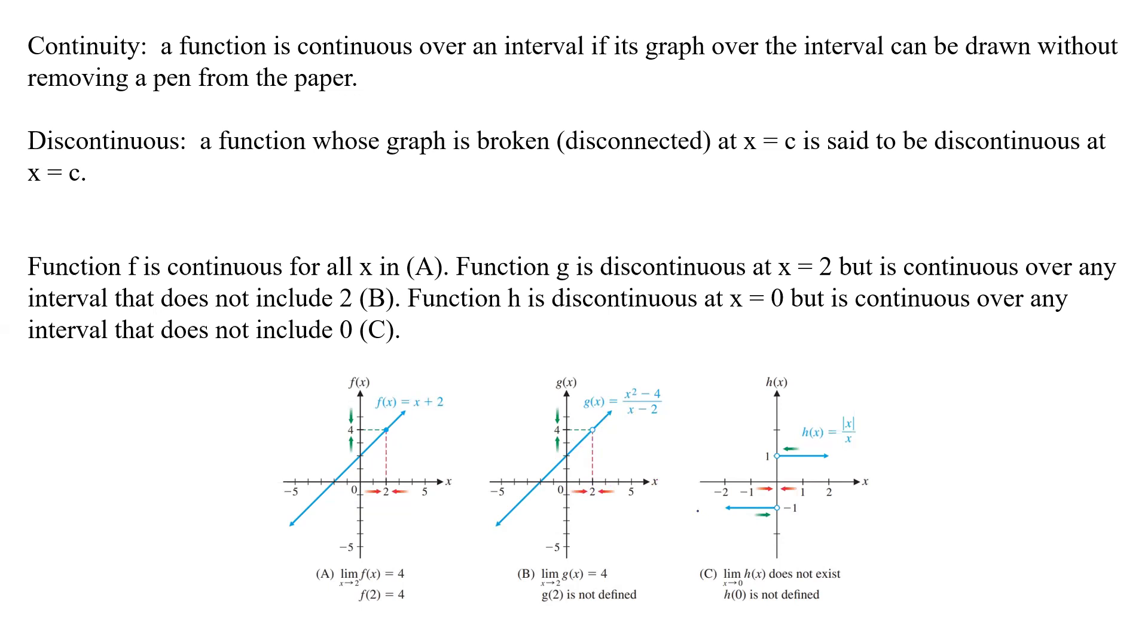And on the next one, we have kind of a multi-piece graph. We have the bottom part down here. Then we have to lift our pen up and then we can go back up here and go over here. So it's discontinuous at x equals 0, but it's continuous everywhere else except for that x equals 0.